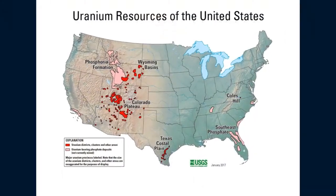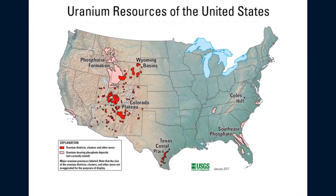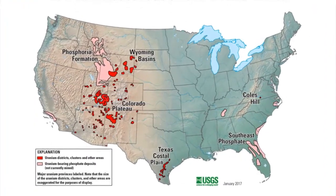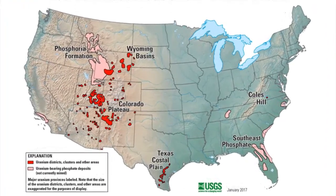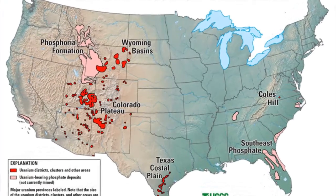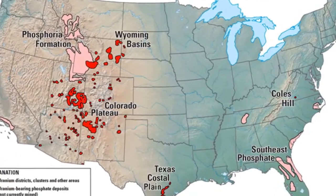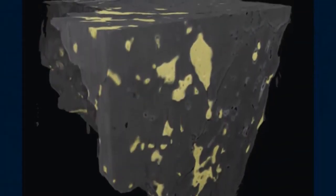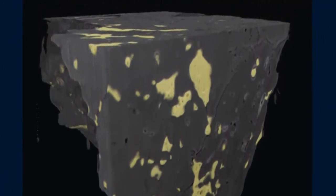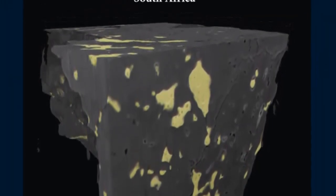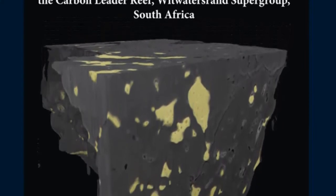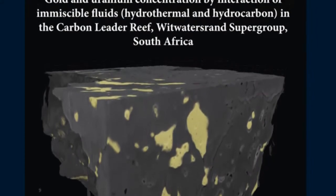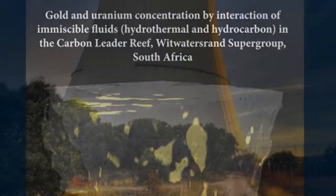In the United States, the richest Uranium deposits are found in Jurassic and Triassic sandstones in the Colorado Plateau, and in younger rocks in Wyoming. Most of these deposits have formed through the precipitation of Uranium compounds from groundwater. Precipitation of Uranium occurs as a result of a chemical reaction with organic matter, as evidenced by the concentration of Uranium in fossil logs and organic-rich black shales.